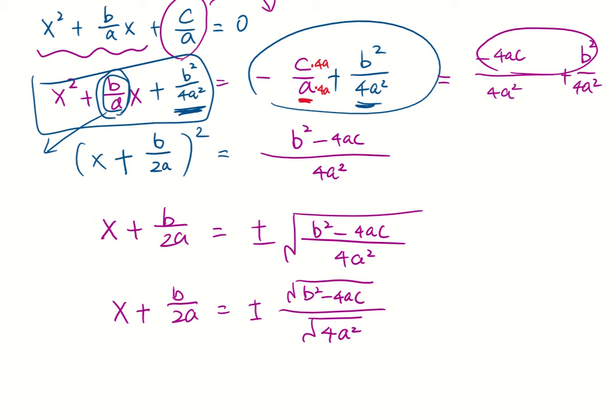We know square root of 4a squared will be 2a, right, because square root of 4 is 2, square root of a squared is a. So the bottom becomes 2a here.